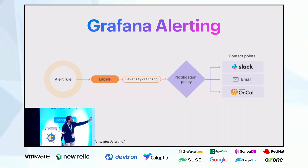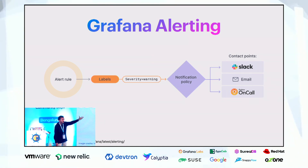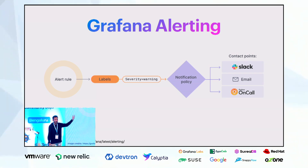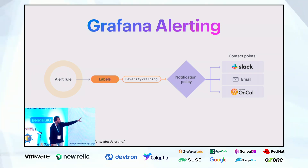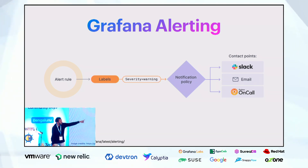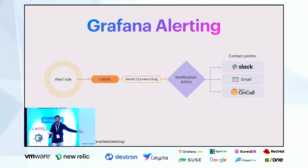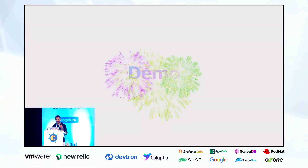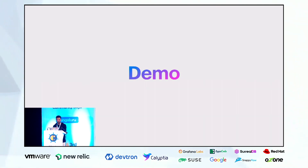For Grafana alerting, we define an alert rule — for example, if CPU is greater than 90% — and add labels like severity equals warning or critical. We then have notification policies defining how, when, and where alerts get triggered, and contact points like Slack, email, Grafana OnCall, or PagerDuty. Now let's look at the demo.